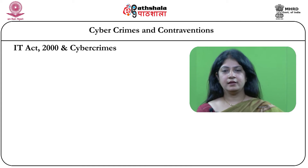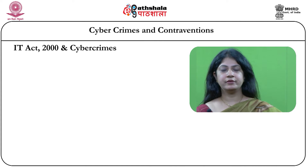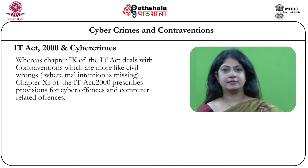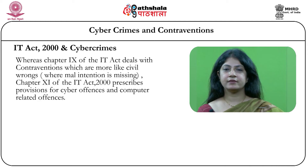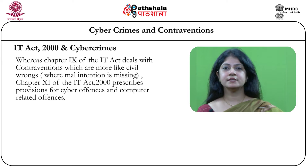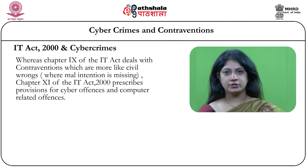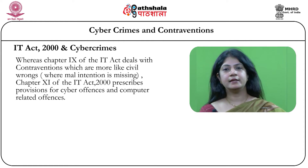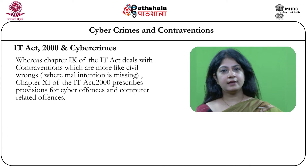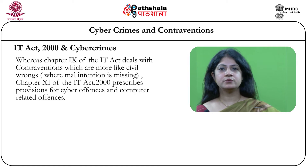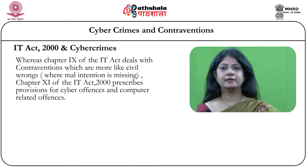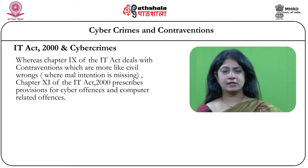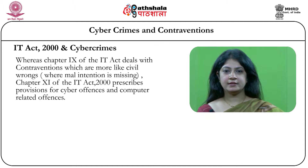If you look at the IT Act, Chapter 9 talks about civil wrongs which are contraventions, and cyber crime is covered by Chapter 11 of the IT Act. The difference is basically that where there is malicious intention, cyber crime gets involved, and wherever there is no malicious intention but perhaps negligence causing an act that has caused loss to someone — which will entitle the victim to seek compensation — it will fall under Chapter 9 of the IT Act.